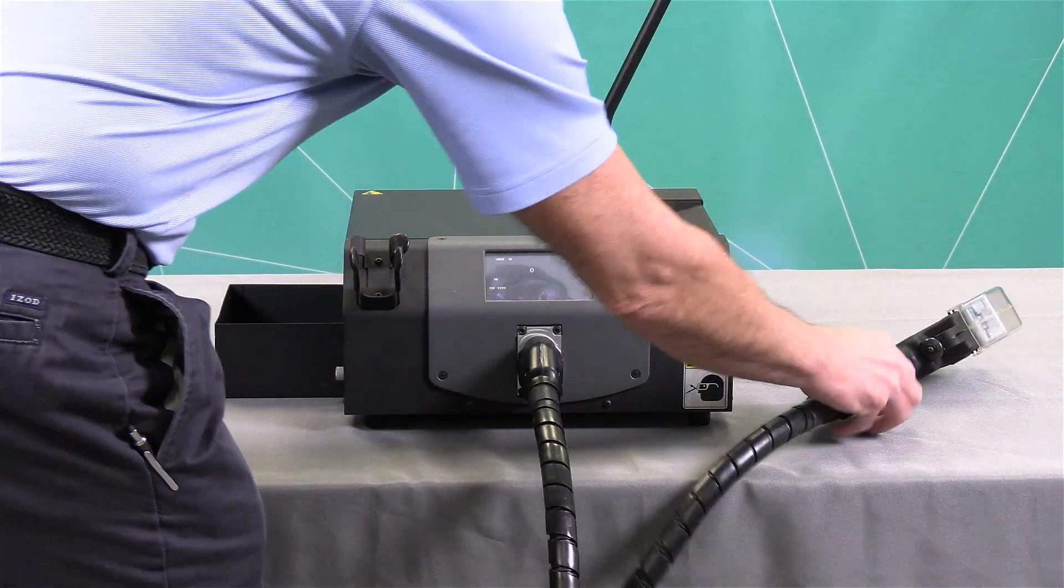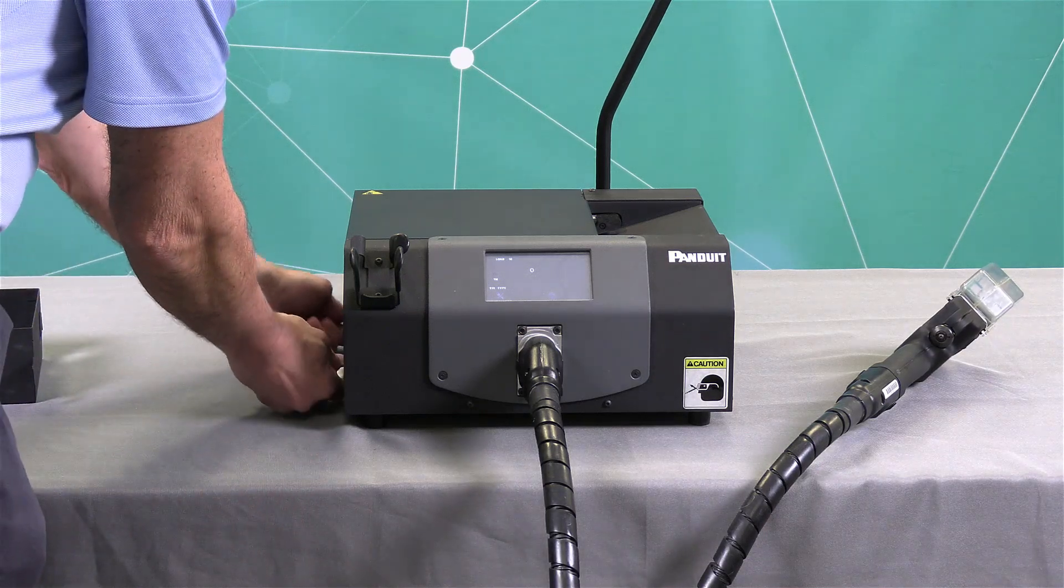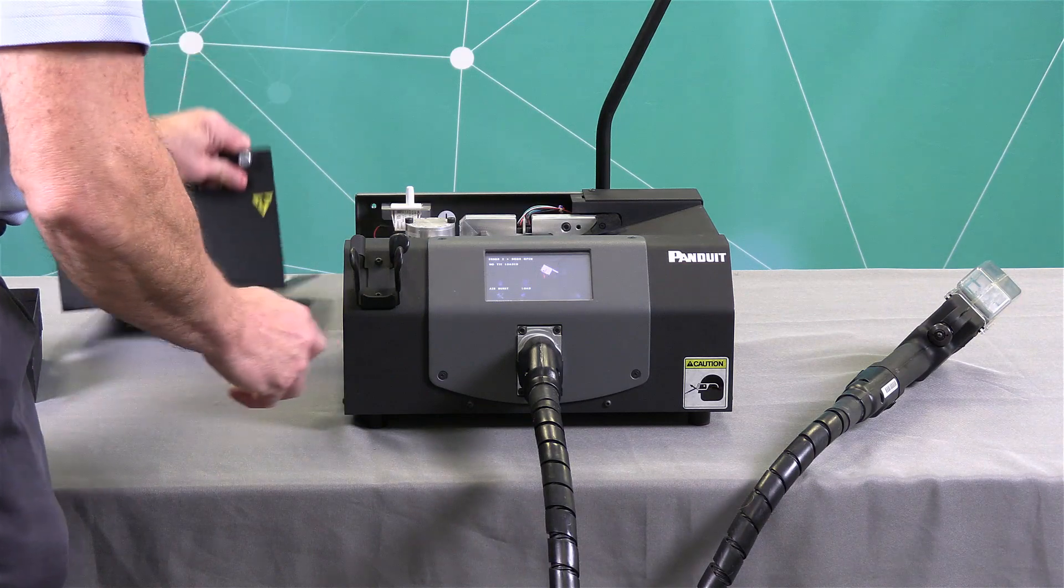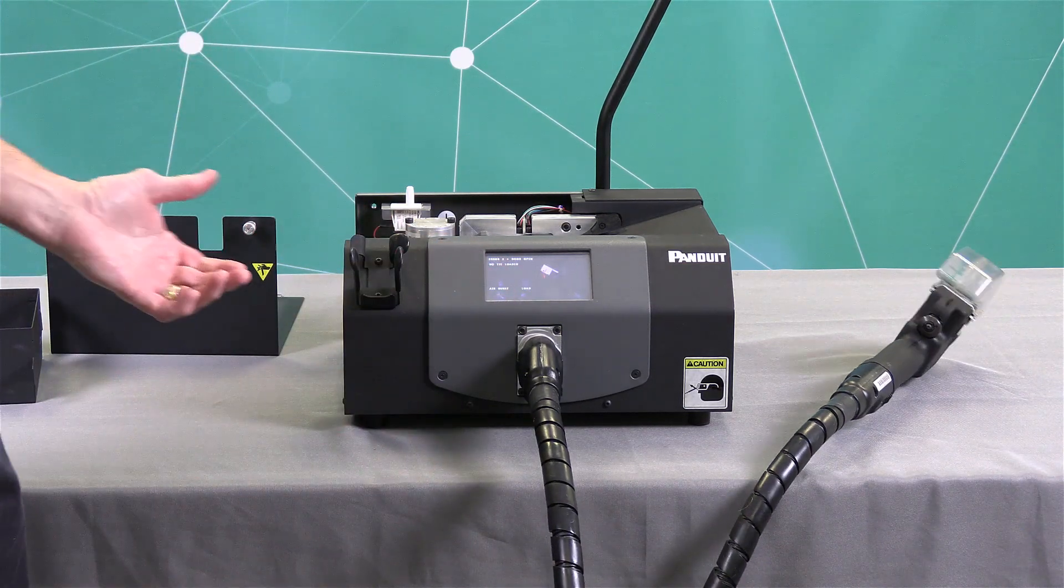Set the tool on the side. Remove the scrap bin from the side. Loosen the thumb screws on the side. And then when you remove the cover, it'll actually start beeping and tell you the cover's open. Press the silence button.